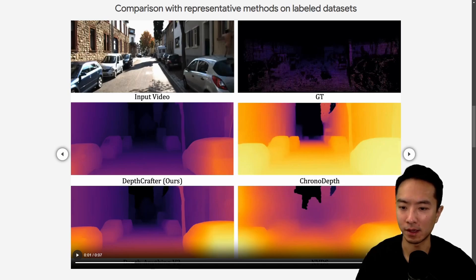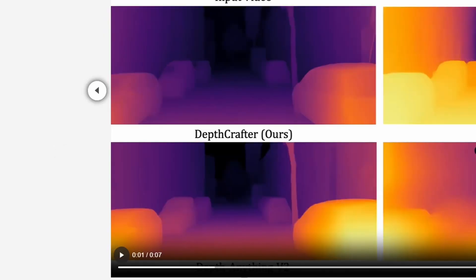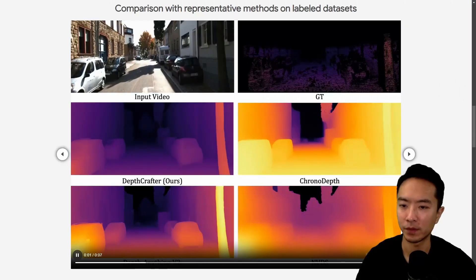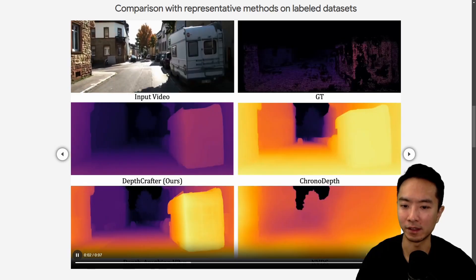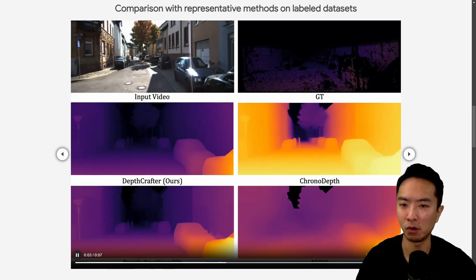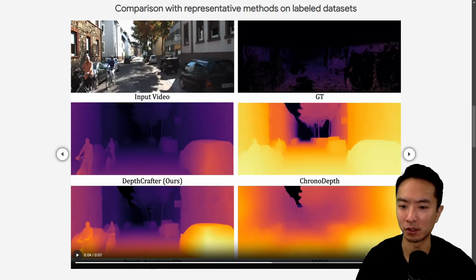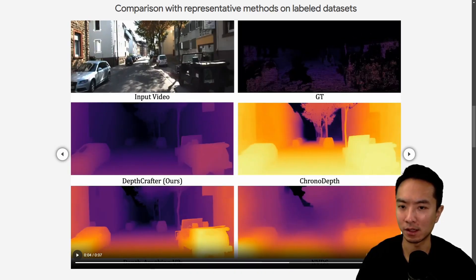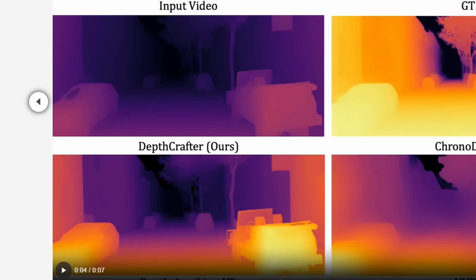you can see that some of the cars in the back have a little bit more detail — just slightly, not a whole lot, but just a little bit. If you notice sometimes right here, the DepthAnything V2 seems to be a little bit better in this particular scene.